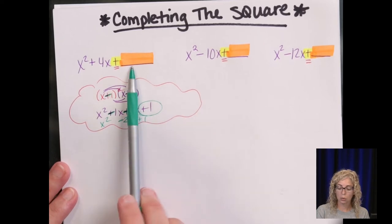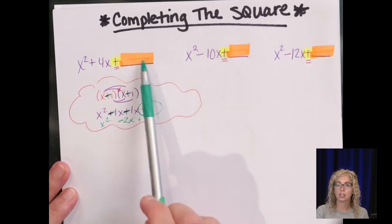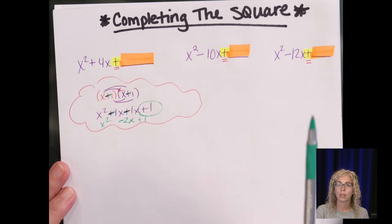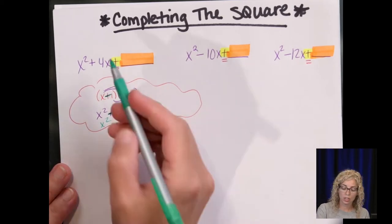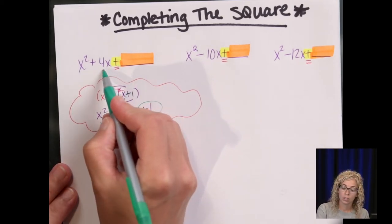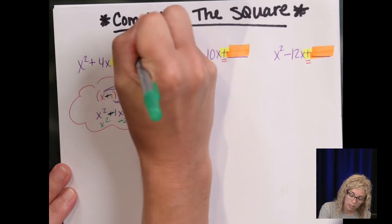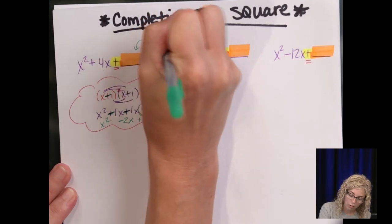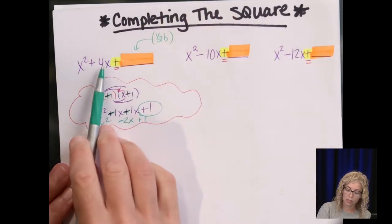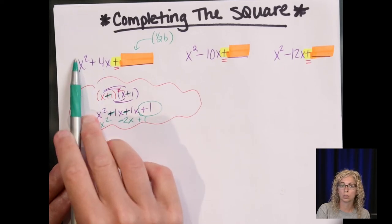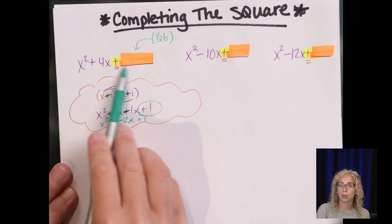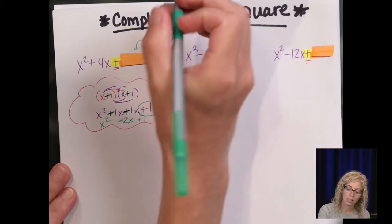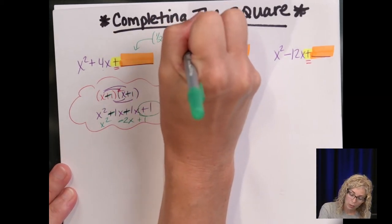So what we're looking for is how do we come up with that last constant. What you do is take half of 4. This constant here is going to be half of the b value, because b goes a, which is 1, the b number, and we're trying to find the c. So take half of b, square it, and that gives me the c value.